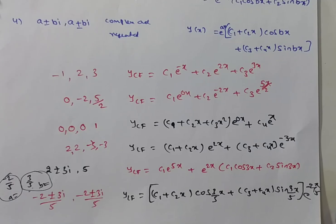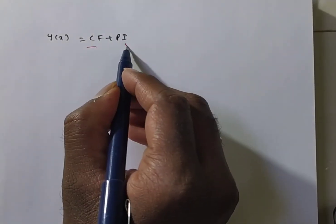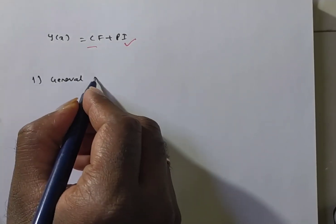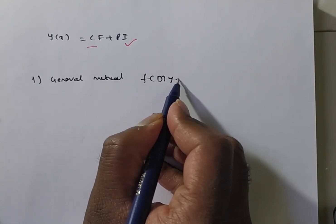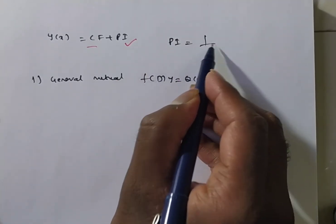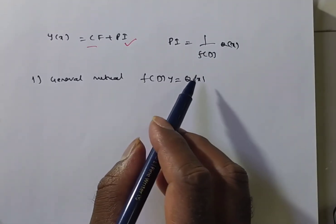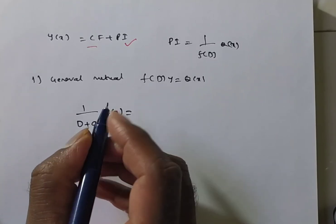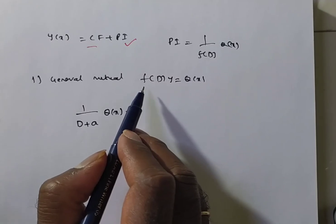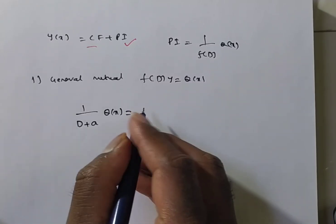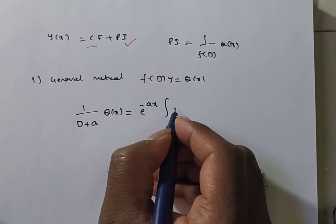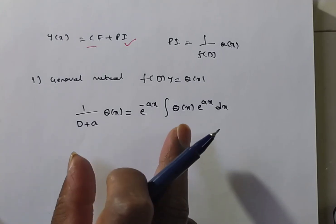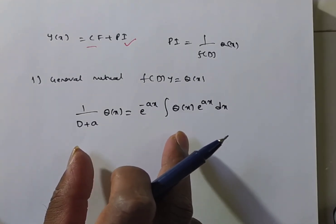Next, we discuss the particular integral. The general method: for f(D)·y = q(x), the particular integral is (1/f(D))q(x). We write f(D) in linear factors and use the formula: (1/(D+a))q(x) = e⁻ᵃˣ ∫ q(x)eᵃˣ dx. This formula is used in the general method to solve for the particular integral.